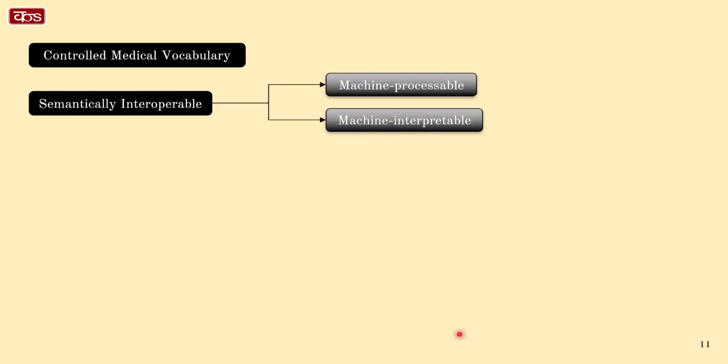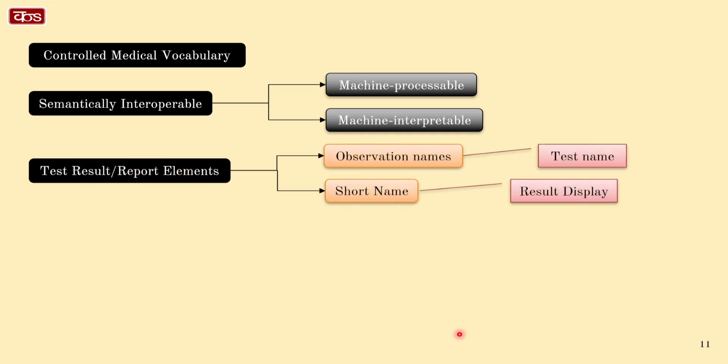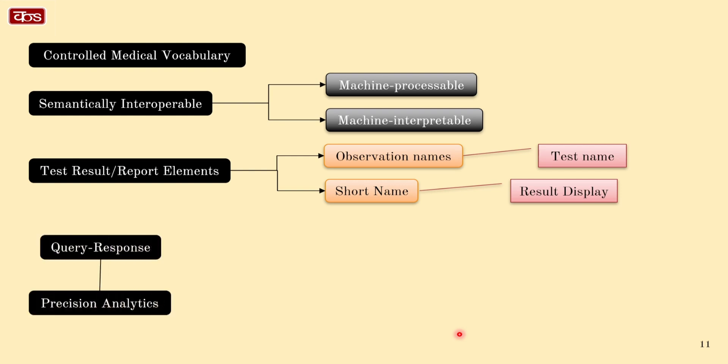So we see LOINC is a controlled medical vocabulary. It is machine processable and machine interpretable, making it semantically interoperable. Great as elements of investigation results and reports where the observation names are the test names and the display or short name used as display names in results and reports. The code can be used to specifically query for a particular information. We can use the same for running precision analytics also.